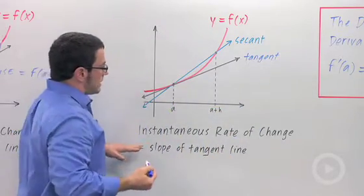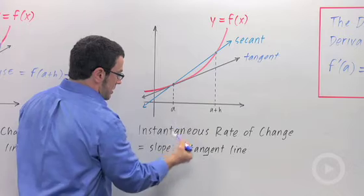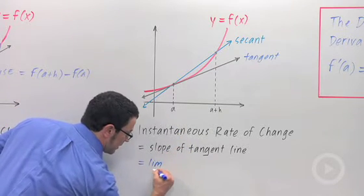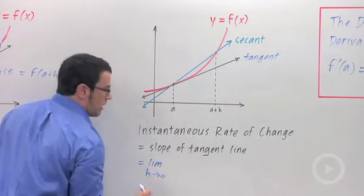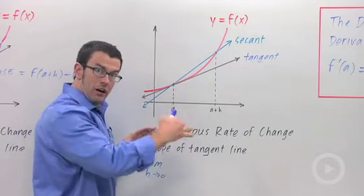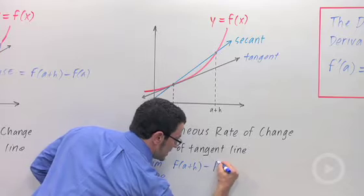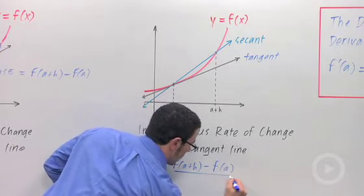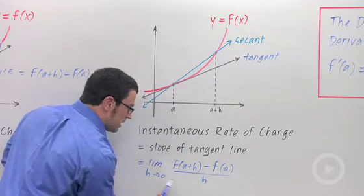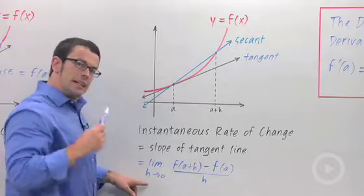The way we get h to go to 0 is we take limits. So the limit as h goes to 0 of the average rate of change, f of a plus h minus f of a over h. Taking the limit of that average rate of change gives us the instantaneous rate of change.